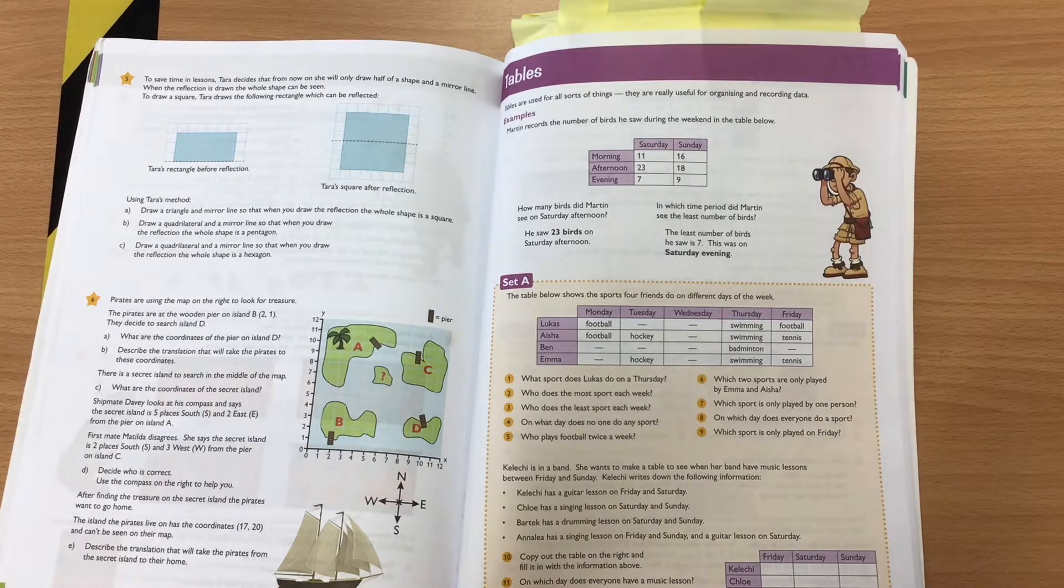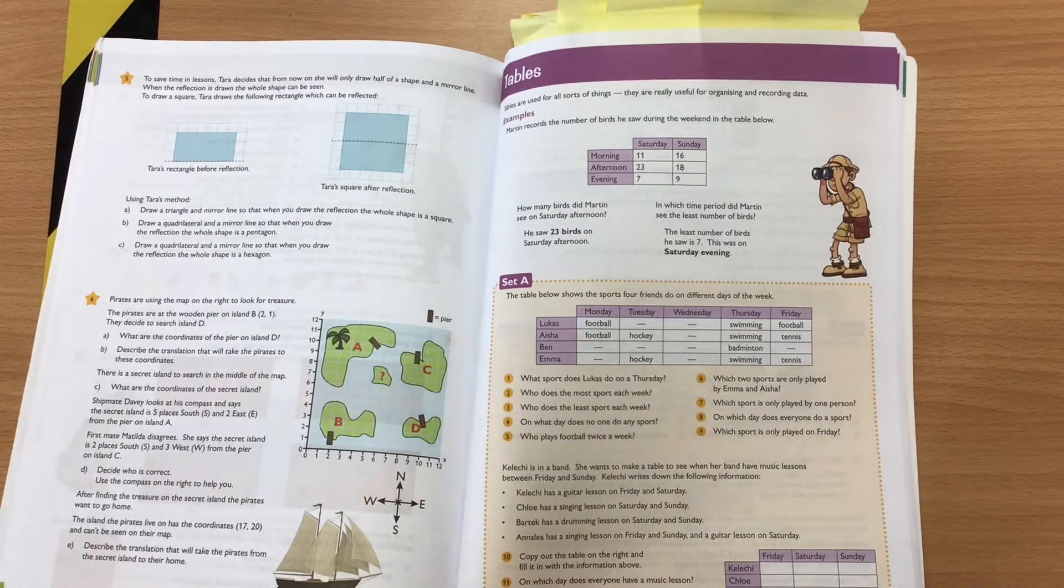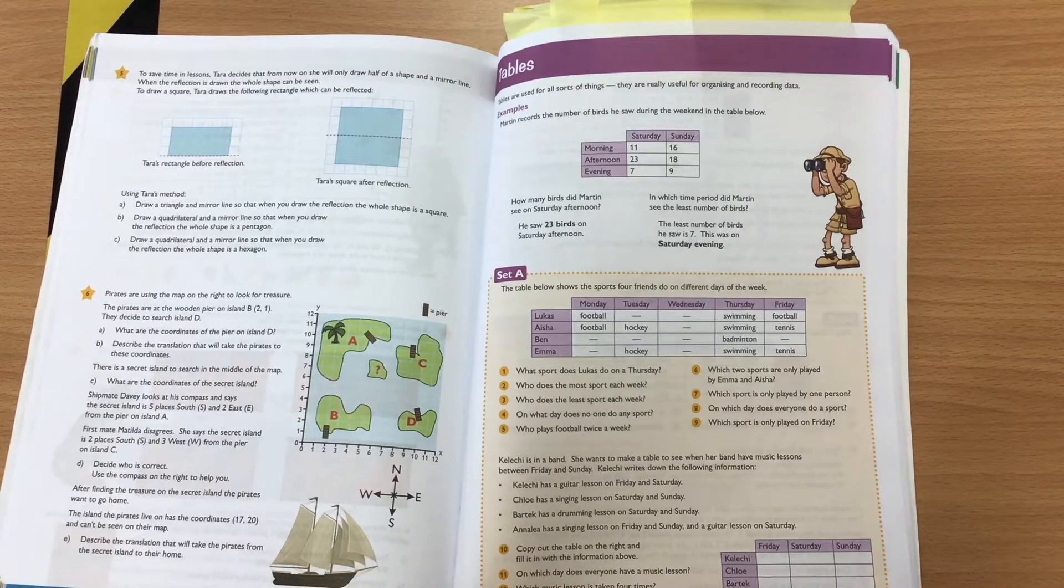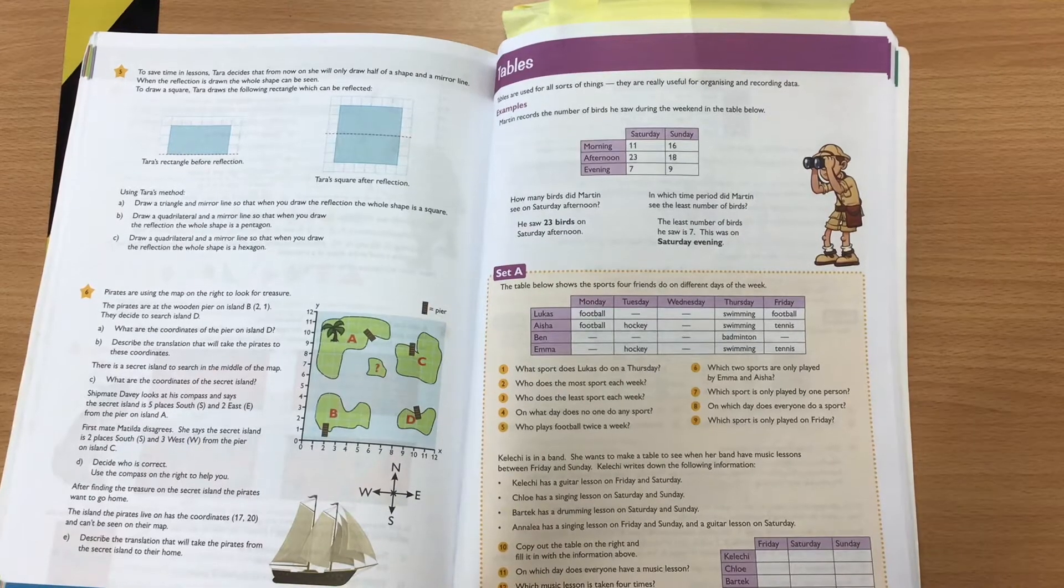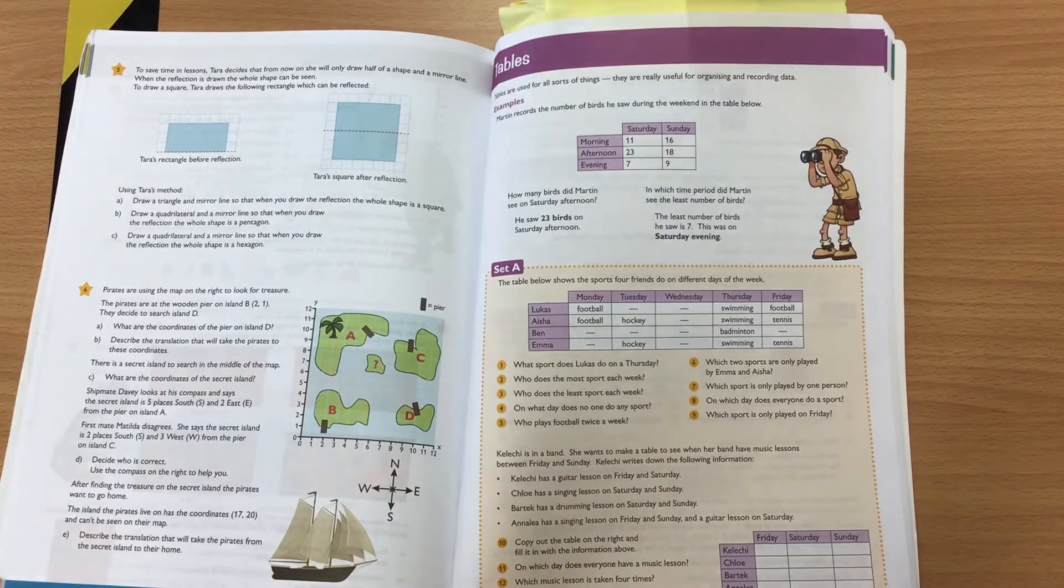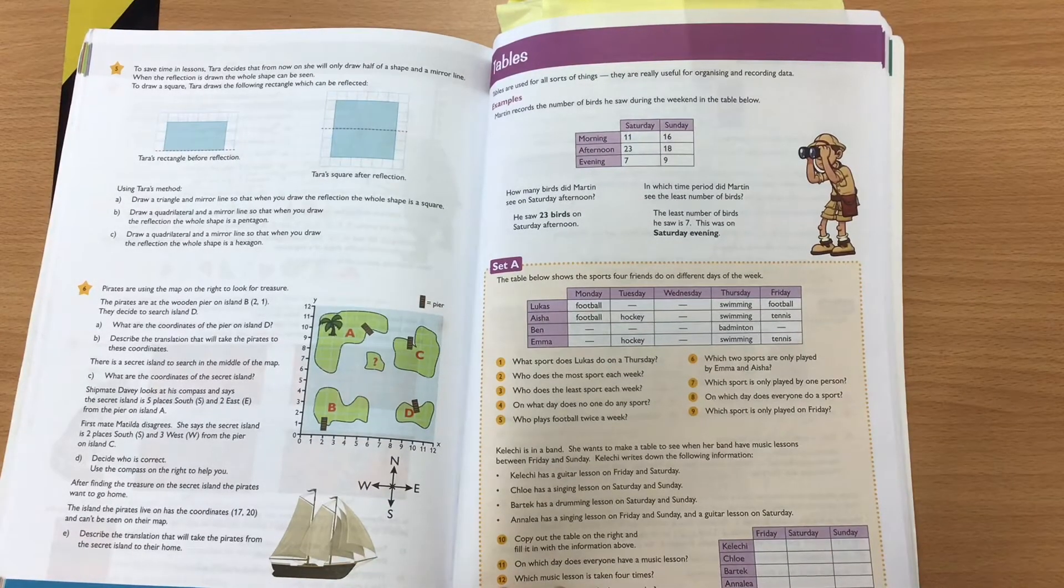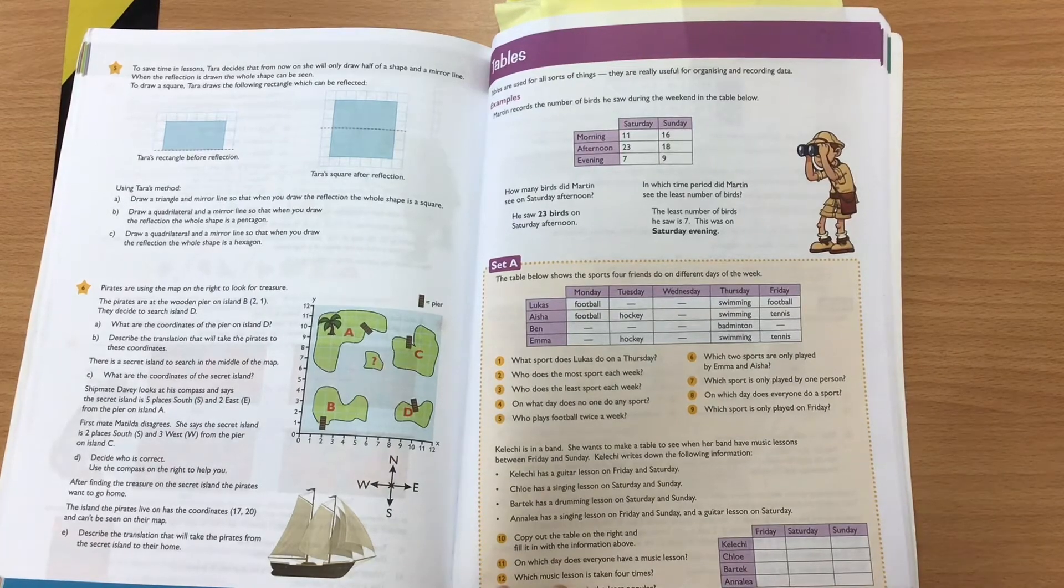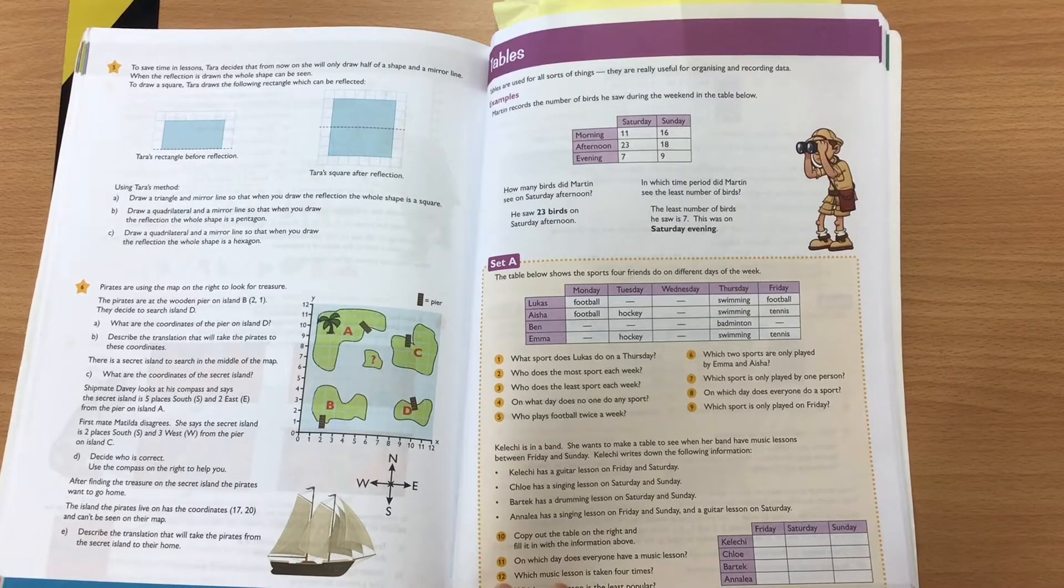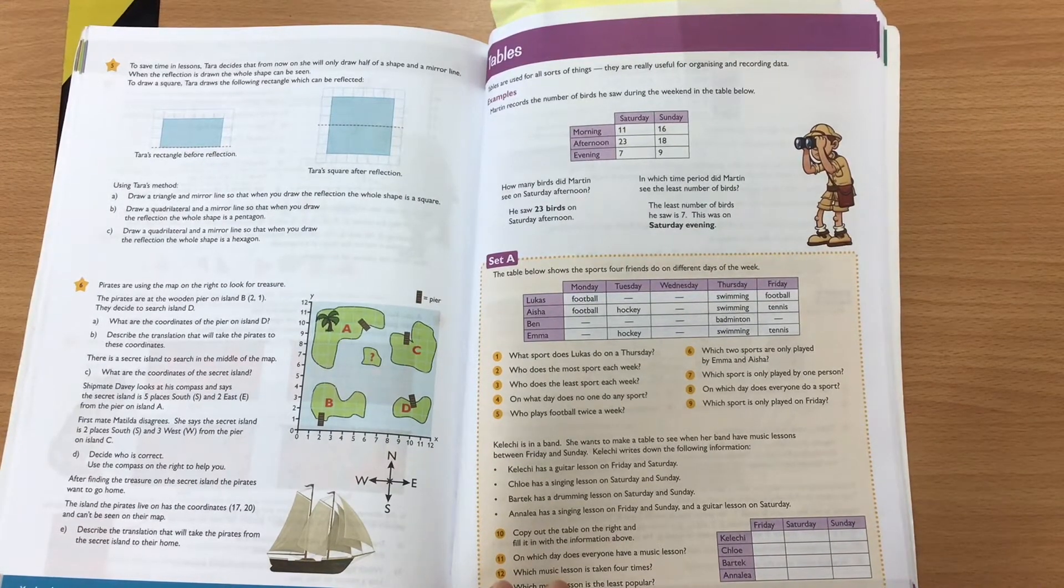Tables are a really useful way for organizing and recording data. So here we have our table in our example. Before we begin, I just want you to have a think about when you might use tables in real life. A few examples that I have thought of are when you might be at a bus stop, you use a table to find out when the bus is coming, or when you're at a football match, you might look at a table to check what the score is.